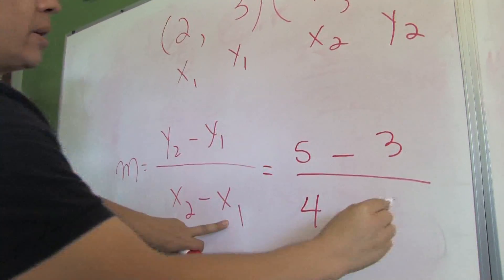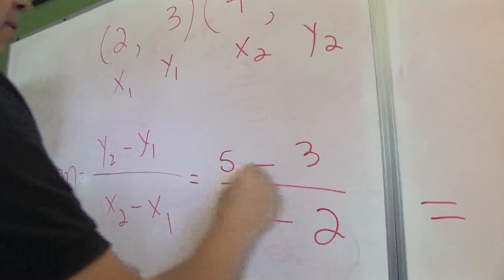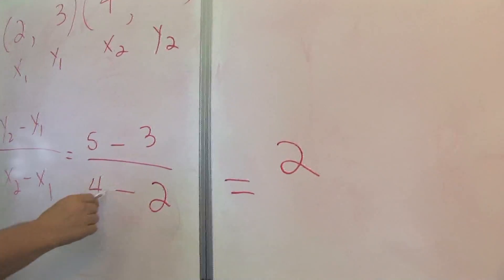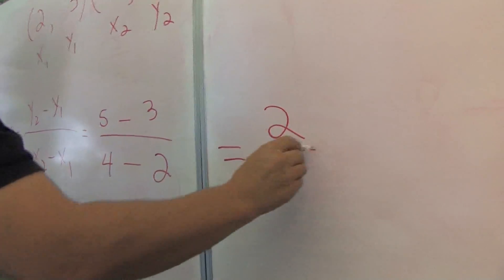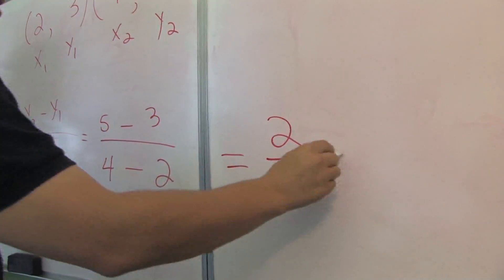x1, x1 is there. And then calculate. 5 minus 3 is 2 and 4 minus 2 is 2. So, the slope is 1.